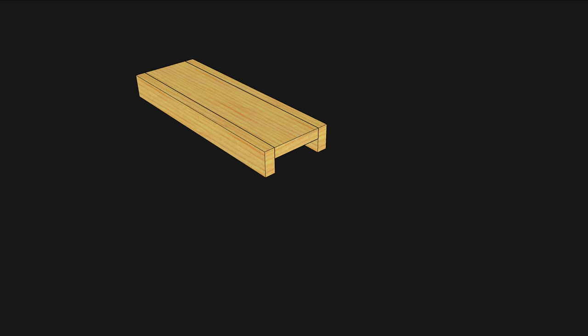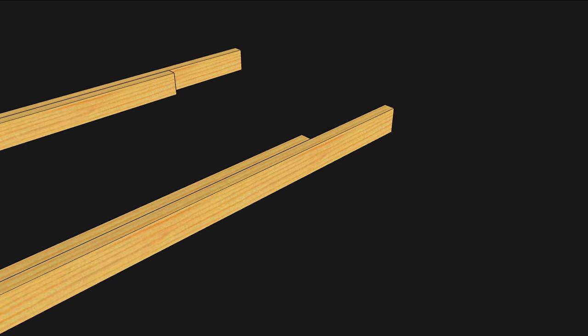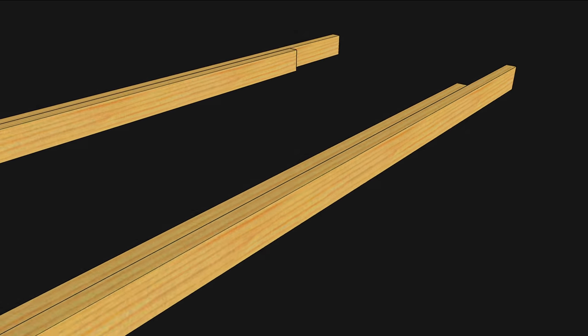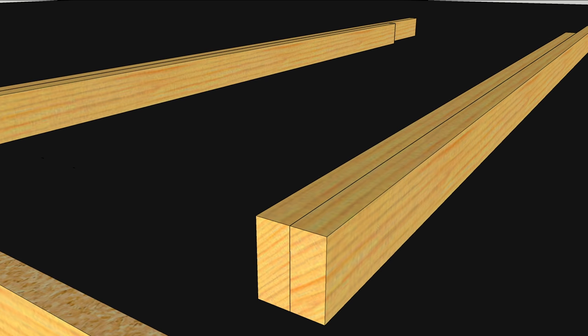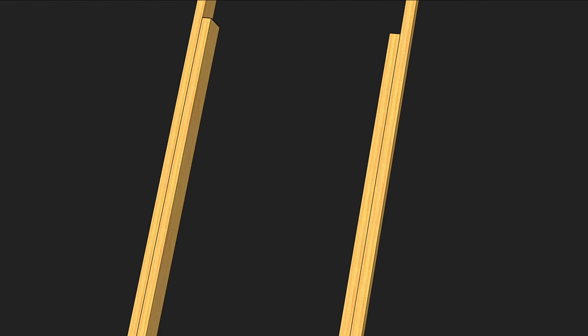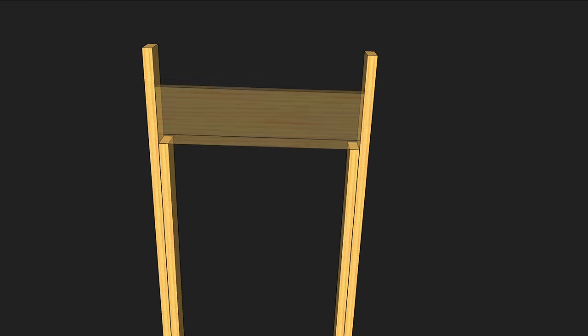To pre-build an opening, begin by nailing the jack studs to the king studs. The height should be specified in the plans. Make sure the bottoms of the studs are flush and then nail them together. Now the header can plop into the pocket and you've got the basics of a window opening.